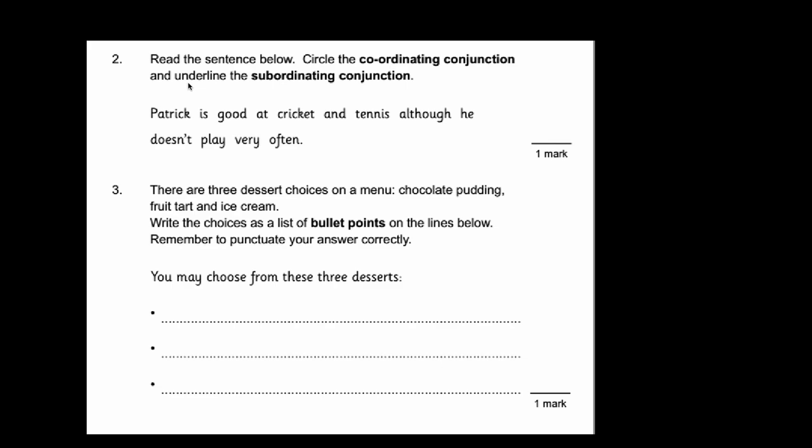Number 2. Read the sentence below. Circle the coordinating conjunction and underline the subordinating conjunction. You should really know coordinating and subordinating conjunctions. The best way to remember is to just write a list of them. If you google them you can find all the most common of both. Try and memorize them as best you can and then it's easier to spot. So if we have a look at the sentence: Patrick is good at cricket and tennis although he doesn't play very often. I know that 'and' is a coordinating conjunction. It brings two statements together and I know that 'although' is the subordinating conjunction. This is a question that always comes up in SPAG tests.